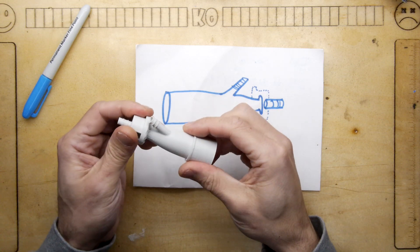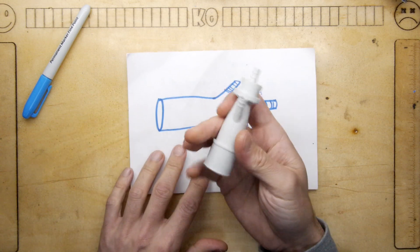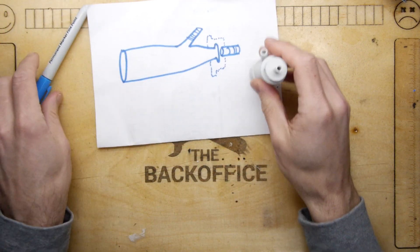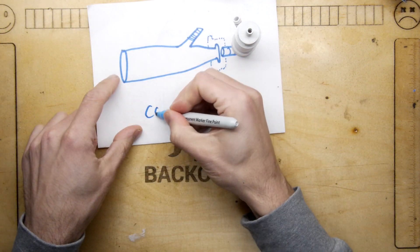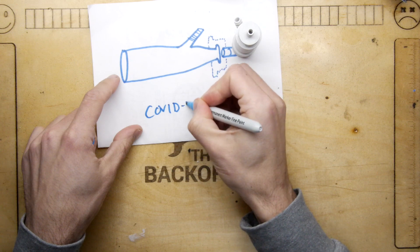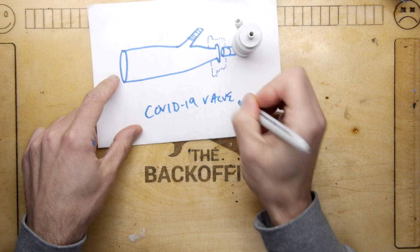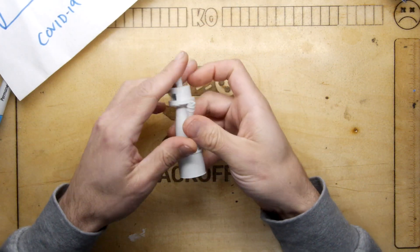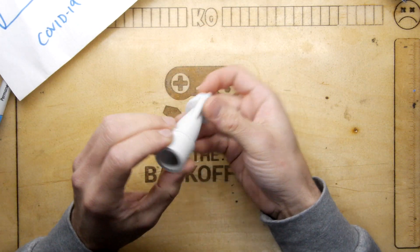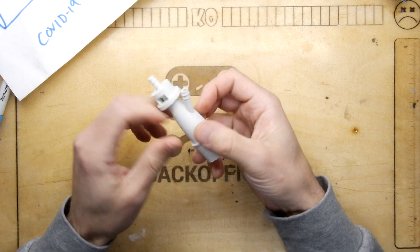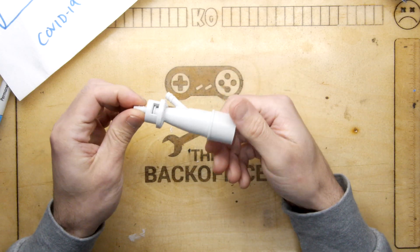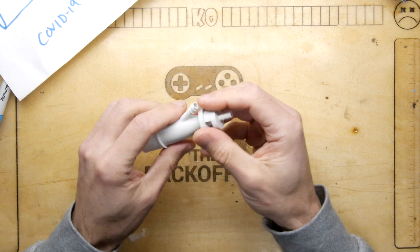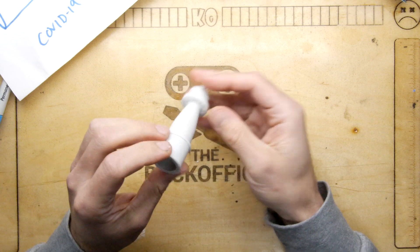If you want one, go to Thingiverse right now and type in 'COVID-19 valve' - not rocket science. That's where I got that model from. Just print one out and have a look. You never know - maybe if you fall ill, put it in your pocket and take it with you.